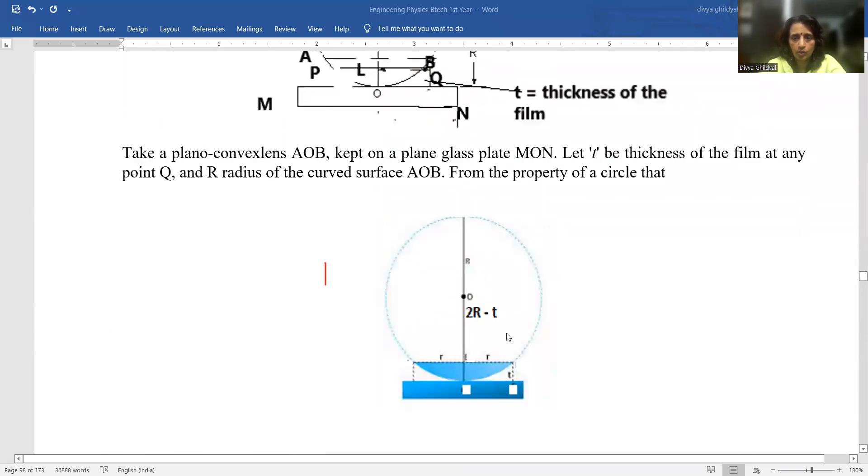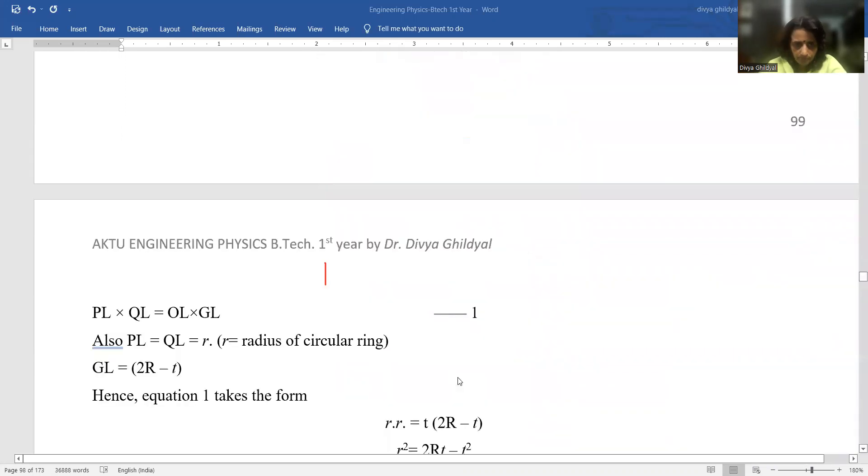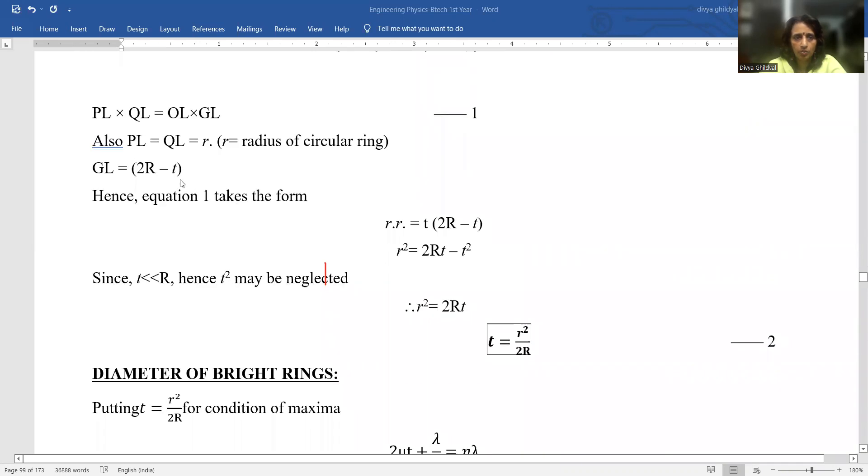2R minus T, and this is my thickness of the air film T, R the radius, and we put these values here in equation one.